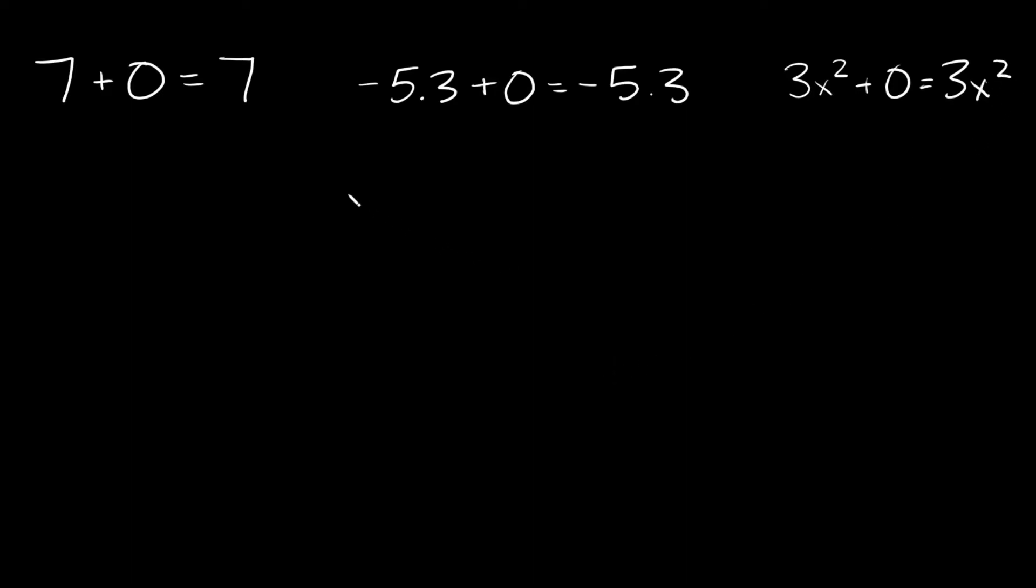So that's pretty straightforward, right? Now the number zero is also referred to as the additive property. Let's write that down: additive. The reason it's referred to as the additive property is because when you add it, it doesn't change the value. The identity property is all about not changing the value. So that's the identity property of addition.